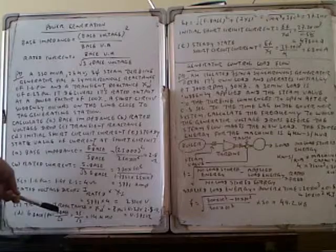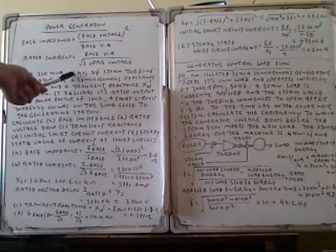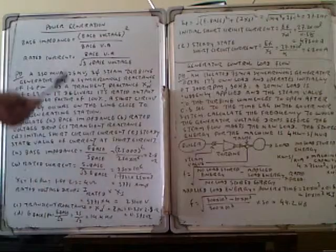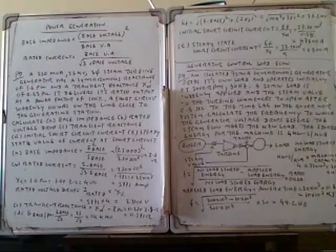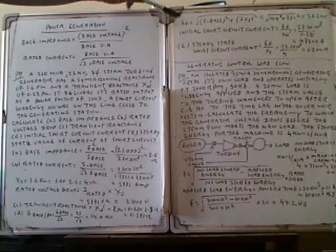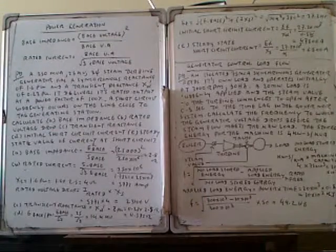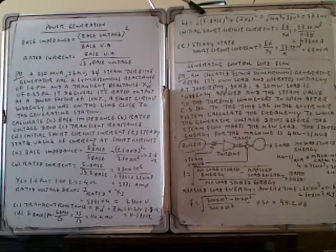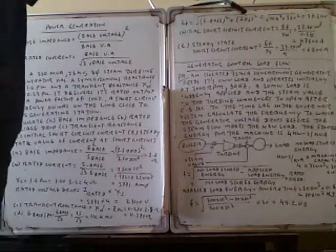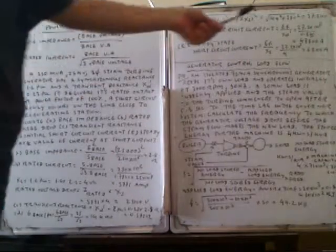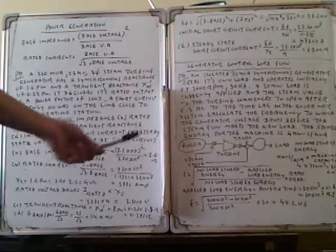We calculate the phase voltage. The base line voltage is 25 kV divided by root 3, giving 14.4 kV per phase. The generated voltage Ef is calculated using the equation: square root of (base voltage squared plus (rated current × synchronous reactance) squared).